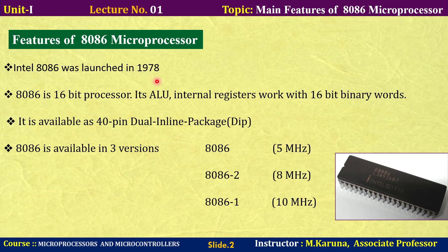The 8086 was launched in 1978, developed by Intel. It is a 16-bit processor; its ALU and internal registers work with 16-bit binary words. It is available as a 40-pin dual inline package, and also available in three versions: 8086, 8086 version 1, and version 2.